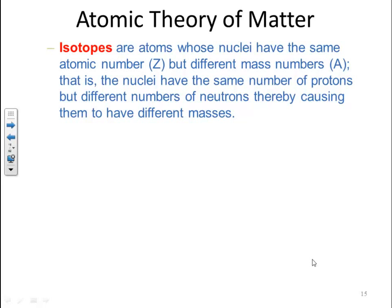Isotopes are atoms whose nuclei have the same atomic number Z, but different mass number A. That is, the nuclei have the same number of protons, but different numbers of neutrons, thereby causing them to have different masses.